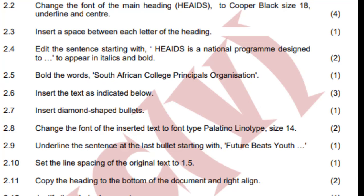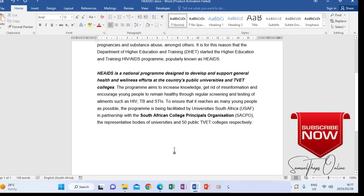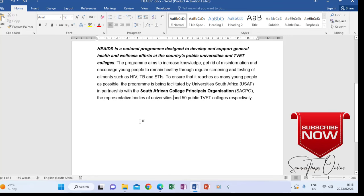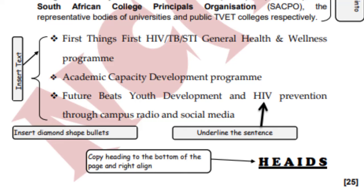Now the bullets will go to the new text that we are going to type. If you see that at the bottom here of the two paragraphs, there is nothing there. But on the instructions in the question paper, it shows that I must add more text. So after adding the text, I will have to insert the bullets as indicated here when they say insert diamond shaped bullets.